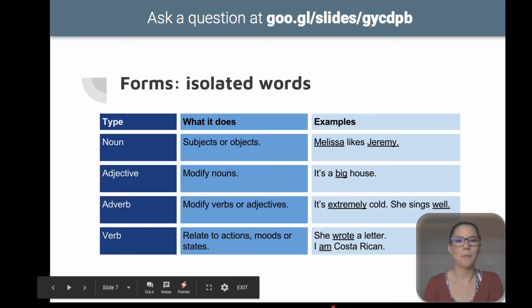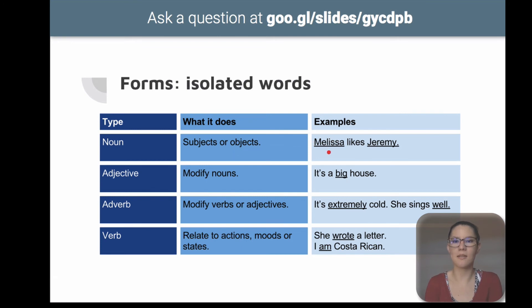So just as a quick review. Remember that nouns work as subjects or objects in sentences, like Melissa likes Jeremy. Subject, Melissa. Jeremy, object. Adjectives work modifying nouns, describing nouns. It's a big house, right? Adverbs, well, an adverb can modify a verb telling you how an action is done, for example. Or an adjective describing the intensity, like in this example, it's extremely cold, not only cold but extremely. And she sings well. How does she sing? Well. The quality of the action.